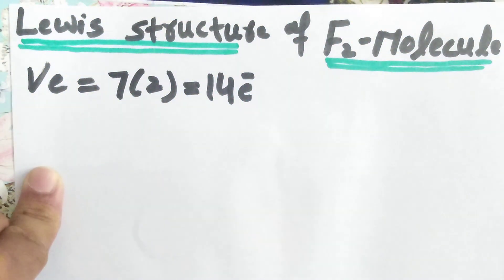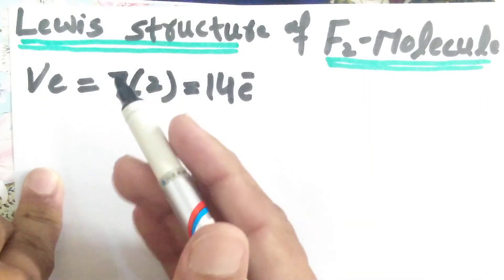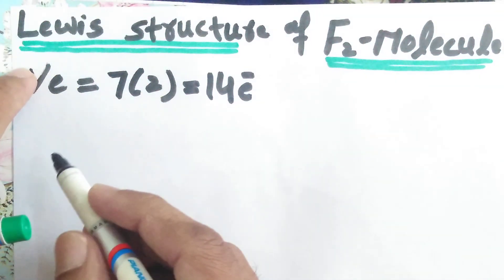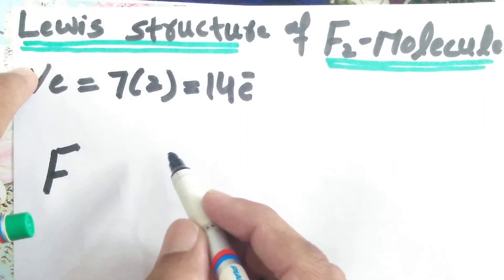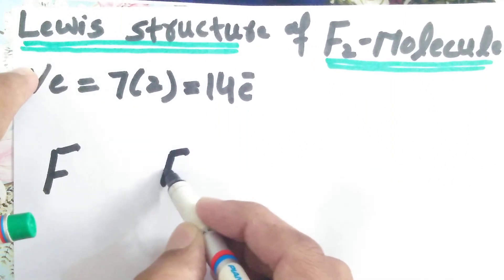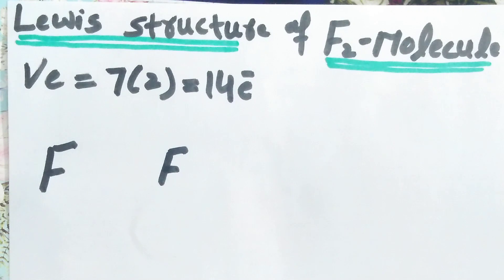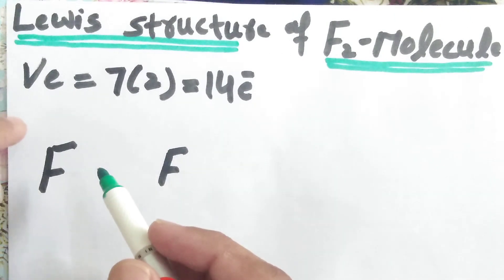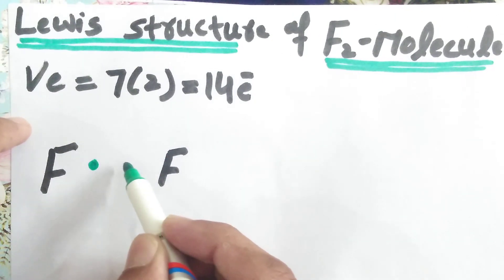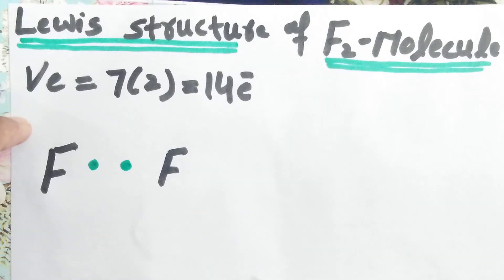And we have to distribute these 14 valence electrons in between the two fluorine atoms. So one fluorine atom and another fluorine atom. First of all, we have to represent a single bond in between the two fluorine atoms.